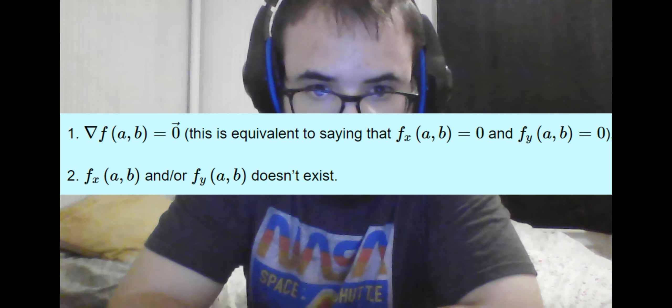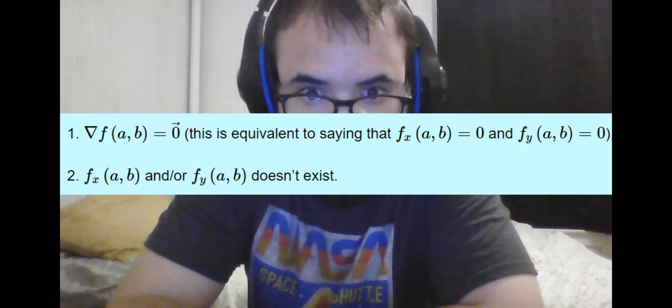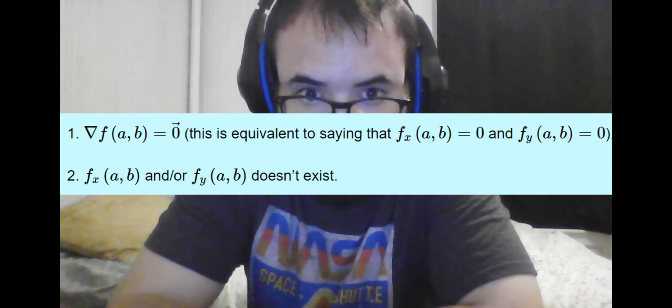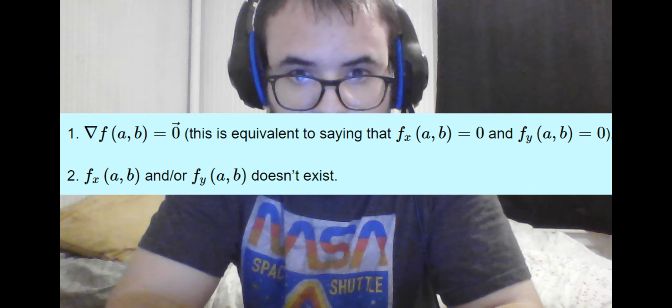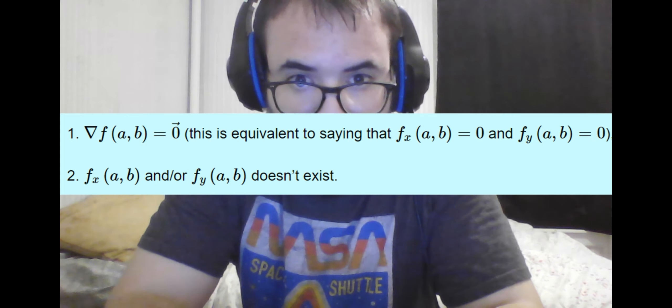And this still holds true for our multivariable functions as well. In particular, we can see that if the gradient is equal to 0 exactly at a specific point, then this must logically guarantee a critical point because the gradient is the vector that gives us all the partial derivatives. So if the vector is 0, it follows all those components would have to be 0 as well.